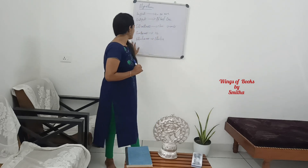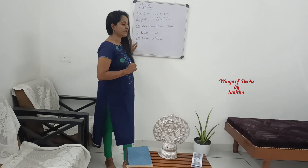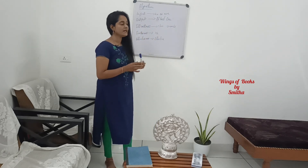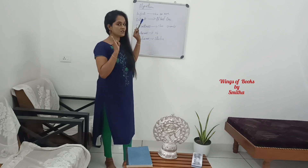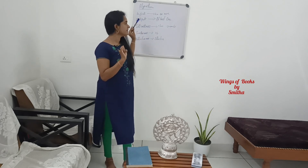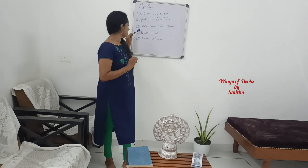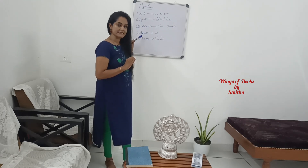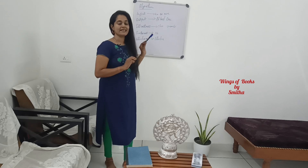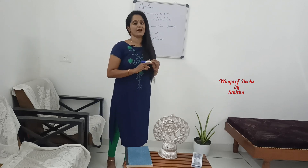The main item is the 5 features of the algorithm. The first one is input, the second one is output, the third one is definiteness, the fourth one is finiteness, and then effectiveness.